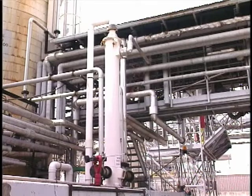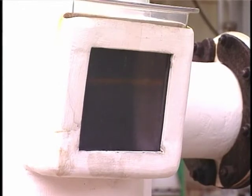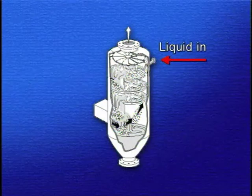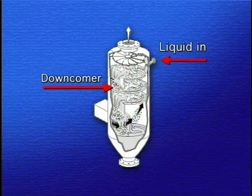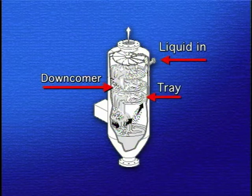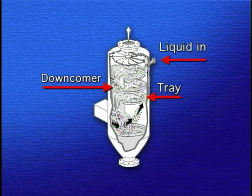Regardless of the tray design, all of these units operate in a similar manner. The contaminated gas stream enters at the bottom and flows upward through the holes in the plates. The liquid enters at the top of the tower, flows across the tray, and then through a downcomer to the tray below until it reaches the bottom of the tower. The function of the trays is to disperse the liquid into droplets and the gas stream into bubbles, creating the gas-liquid surface area necessary for good absorption.